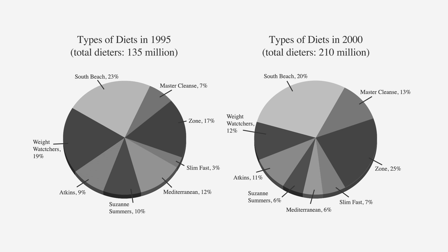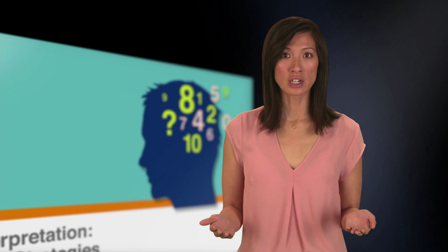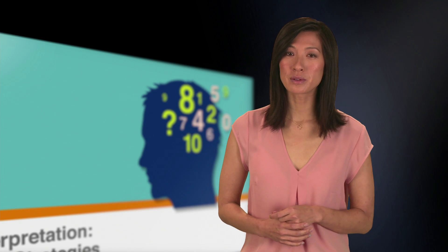Here are two typical data interpretation pie charts that, sadly, don't show anything as delicious as their name implies, but instead compare types of popular diets in 1995 and in 2000. It's important to not get caught up in all the information presented in these visuals. With all that's going on here, you only need to draw specific details to answer your question. So before jumping in to try and make sense of all these pie charts, let's look at the steps we'll use to quickly solve data interpretation questions.